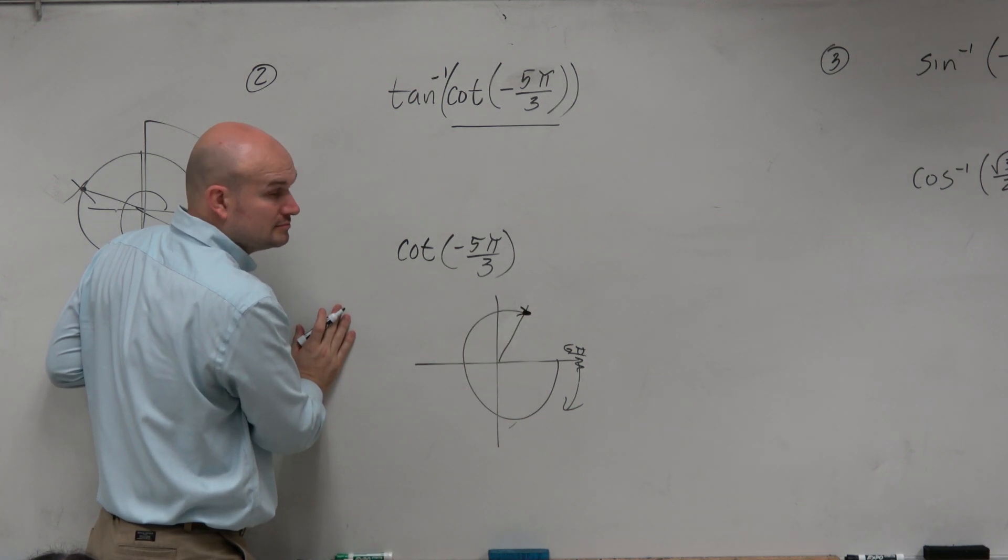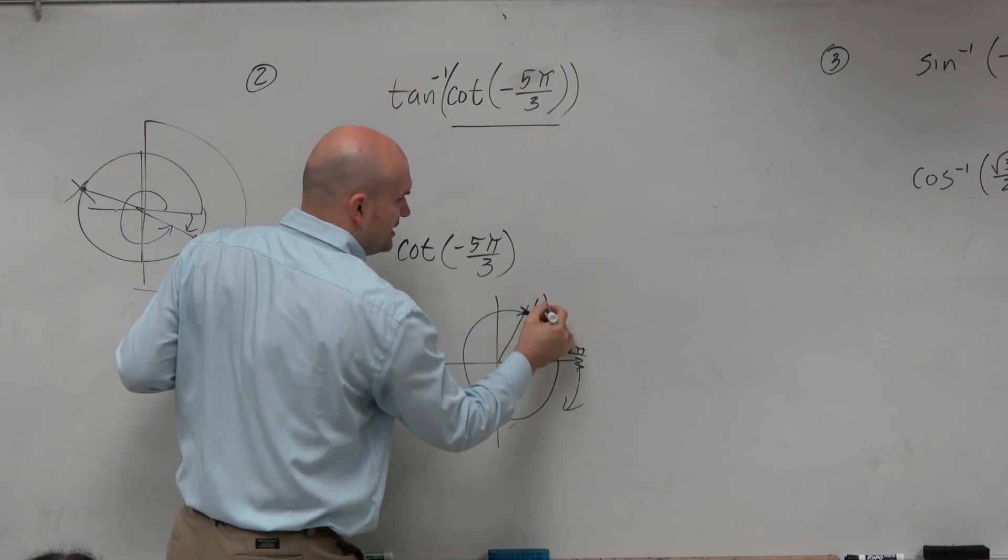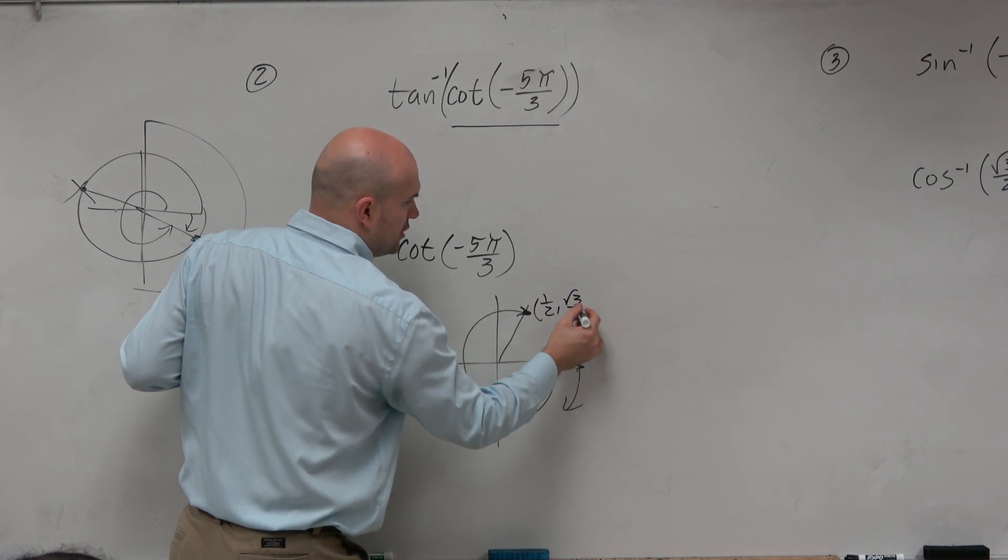Agreed? So then I say, well, what is that coordinate point? That coordinate point is 1 half comma square root of 3 over 2.